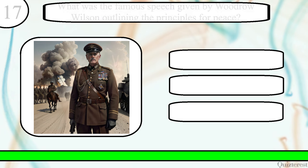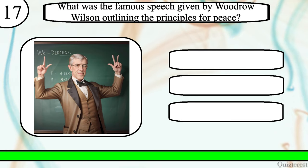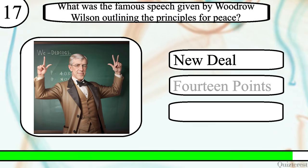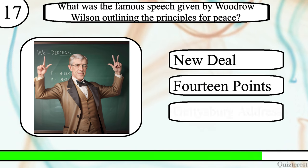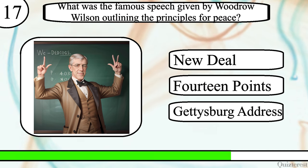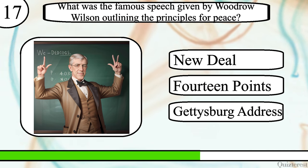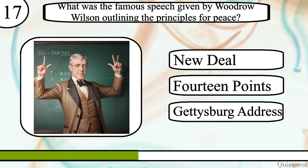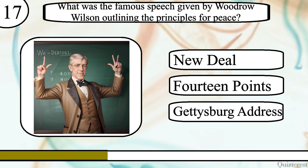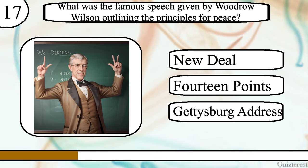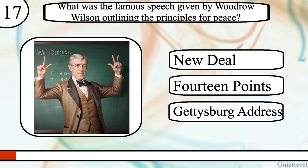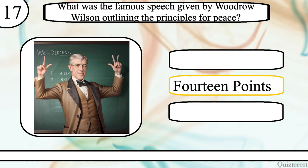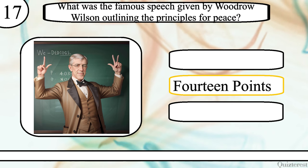Question 17. What was the famous speech given by Woodrow Wilson outlining the principles for peace? New Deal, 14 Points or Gettysburg Address? The correct answer is 14 Points.